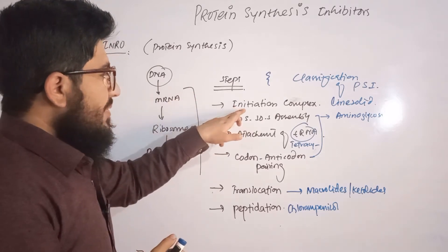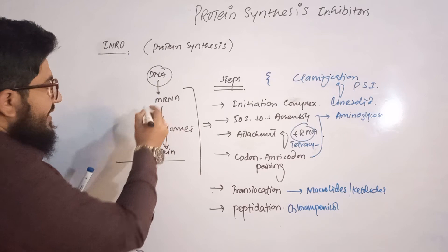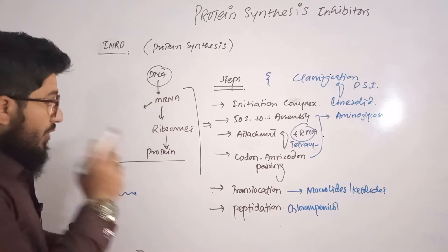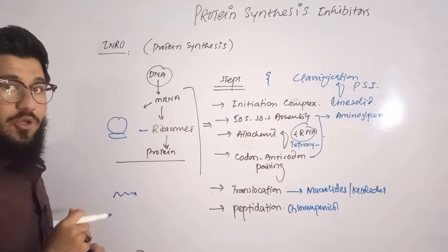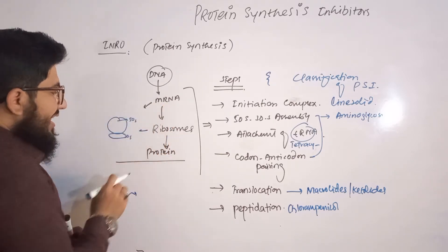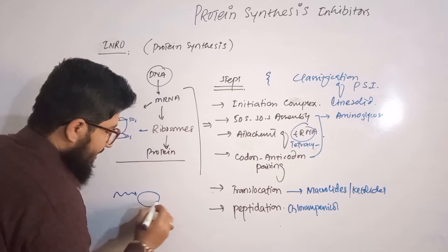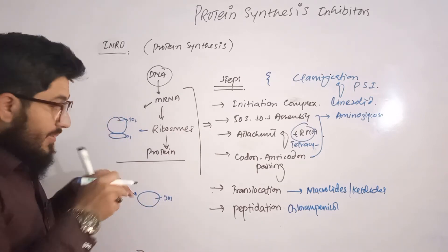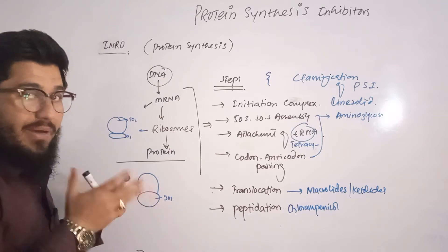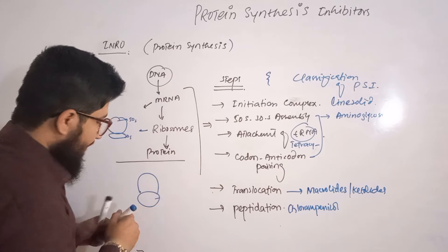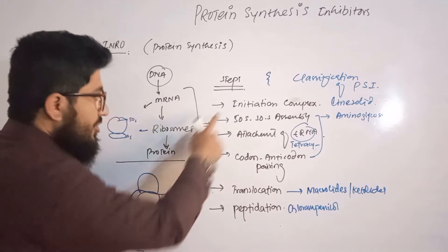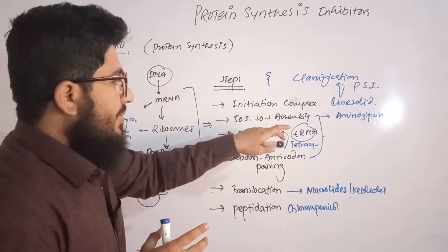The region from messenger RNA to protein is composed of the following steps. The very first step is the initiation complex. The newly synthesized messenger RNA binds to the small subunit of the ribosome — the 30S subunit. Then the large 50S subunit comes and binds to the 30S subunit. All combined together, this is called the initiation complex: 30S unit, 50S unit, and the messenger RNA.